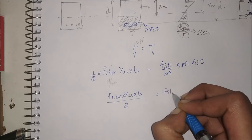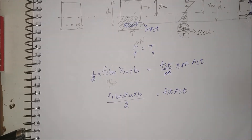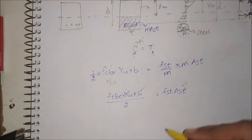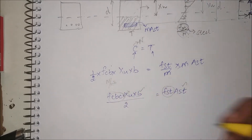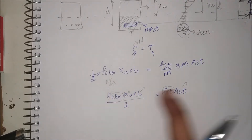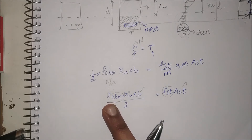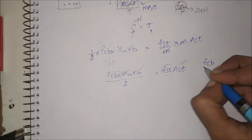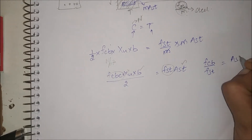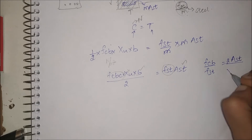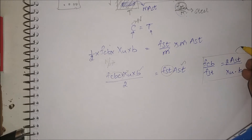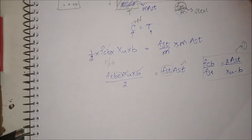As a result, setting C equal to T: FCBC times XU times B divided by 2 equals FST times AST. Rearranging, FCBC divided by FST equals 2 times AST divided by XU times B. Let this be Equation 1.